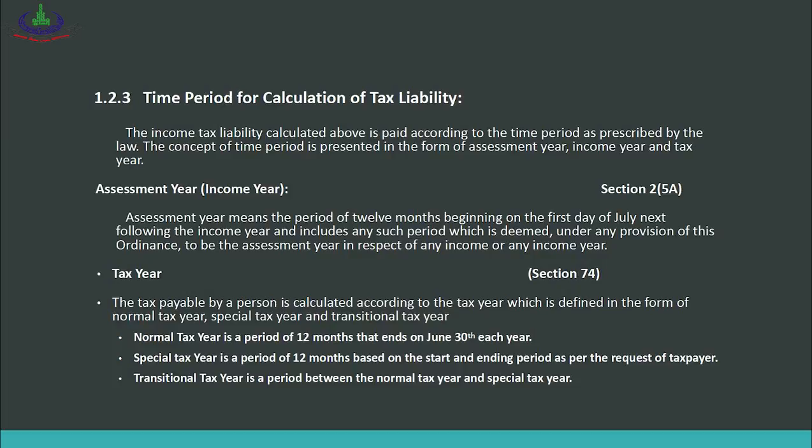Assessment year means the period of 12 months beginning on the first day of July next following the income year, and includes any such period which is deemed under any provision of this ordinance to be an assessment year in respect of any income or any income year. Previously the assessment year and income year were separate, but now your assessment year is the same as your income year. For example, if a person starts a job and 12 months pass, the income received in those 12 months will be taxed in that same 12-month period — that is both the income year and assessment year.